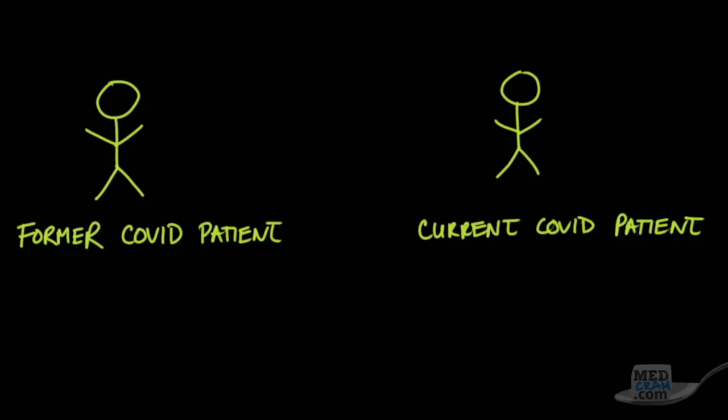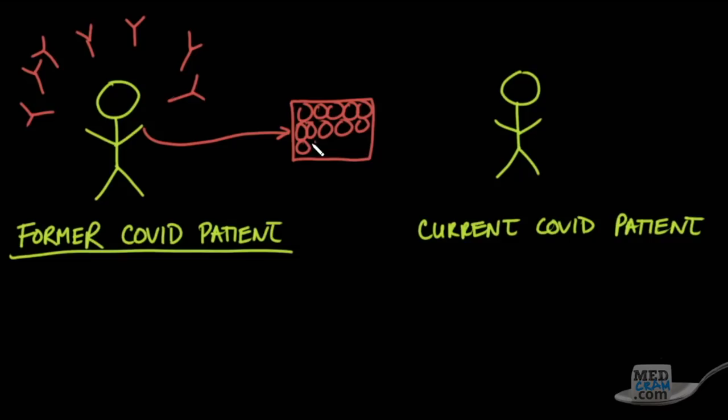Let's quickly look at the short history of convalescent plasma for the treatment of COVID-19. The basis goes back many years, even before antibiotics. A former COVID patient would have made antibodies against the virus and recovered. If you wait long enough so all the antibodies have been made and all the virus is gone, you take plasma, which contains the antibodies.